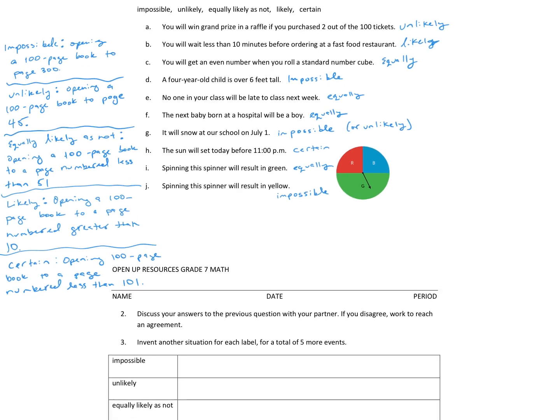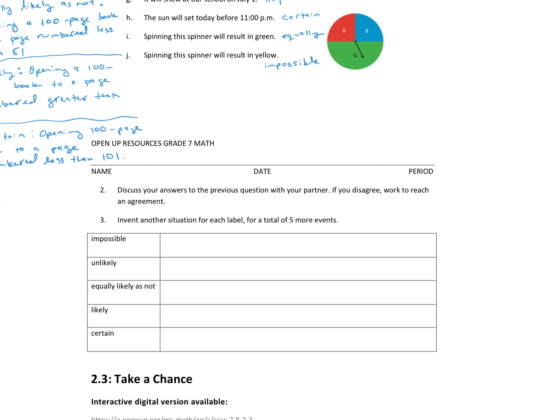Okay. So, now that we've checked those answers, I want you guys to invent your own situation for each label. Make sure you have one for each type, so you should have five or more events. So, pause the video and go ahead and work on that.